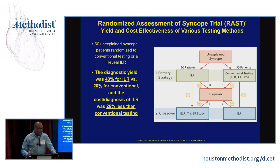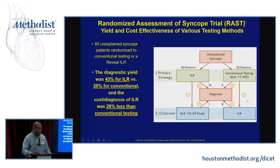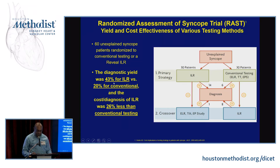The RAST study looked at the assessment of syncope — the yield and cost-effectiveness of implantable loop recorders. Patients with unexplained syncope were randomized to an implantable loop recorder versus conventional testing, then crossed over to either an EP study or an implantable loop recorder. The diagnostic yield was 43% for the implantable loop recorder versus 20% for conventional testing — you're getting double the information.